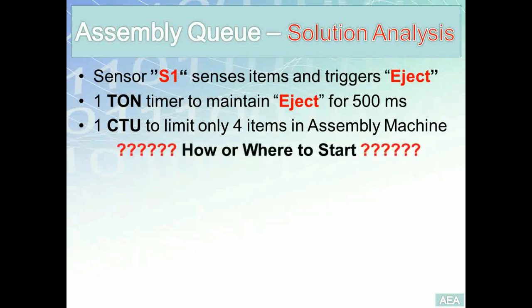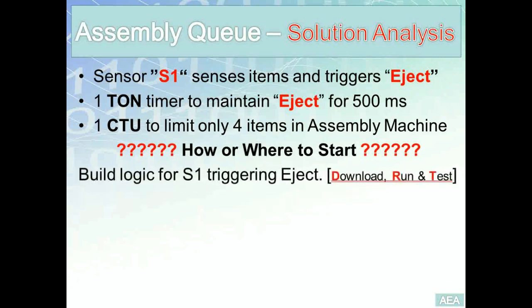How do we start? I want you to build the logic one requirement at a time. Do not build the whole logic in one shot. Instead, build the logic for S1 triggering eject first. Ignore the timer and counter as if they do not exist. Build the logic, download it, run it, and test if each time S1 goes from 0 to 1 the eject is actually triggered.